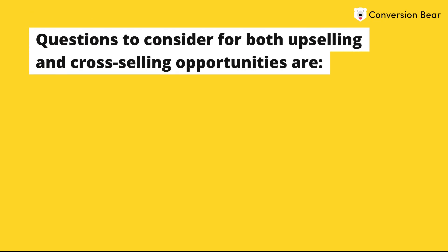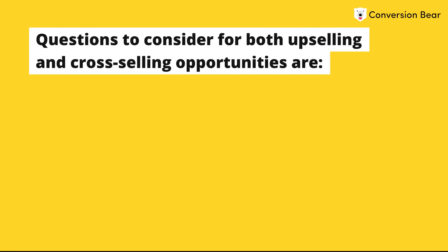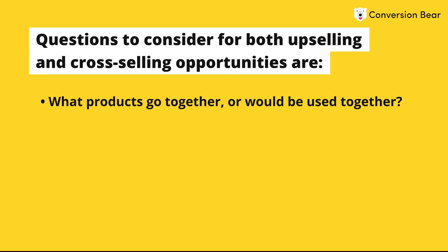Some questions to consider for both upselling and cross-selling opportunities: What products go together or would be used together? If you buy product X, then product Y is a natural add-on product. What versions of a product have more enhanced features or uses? For example, organic versus non-organic beauty products, or improved specifications of a technology product?